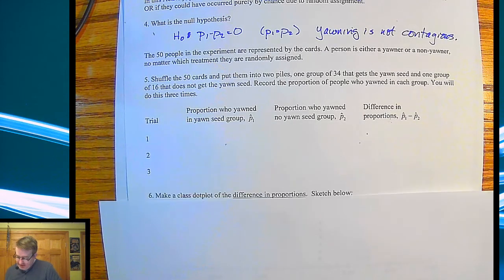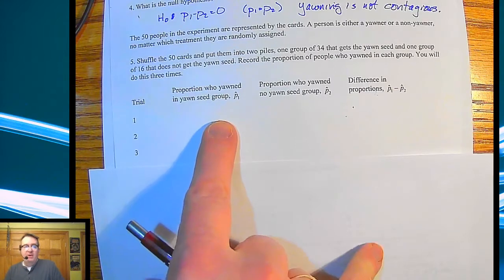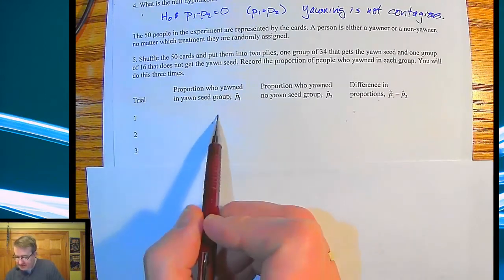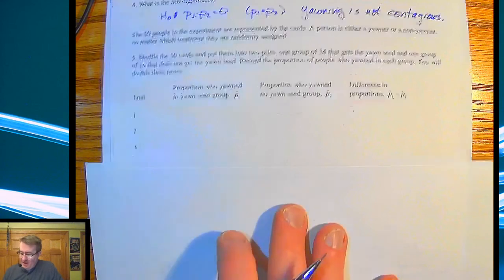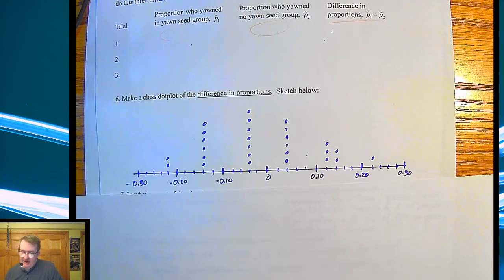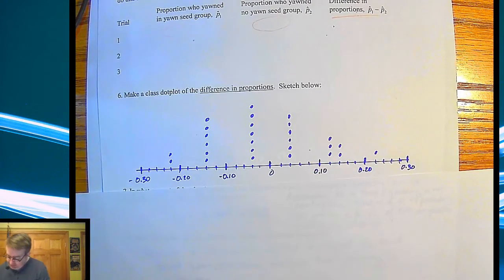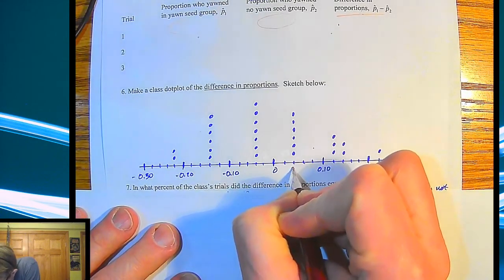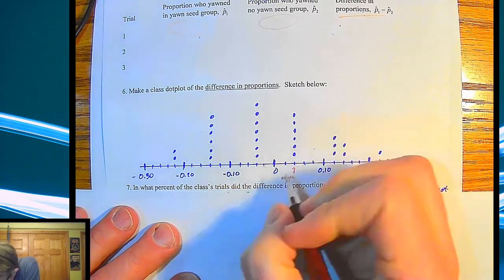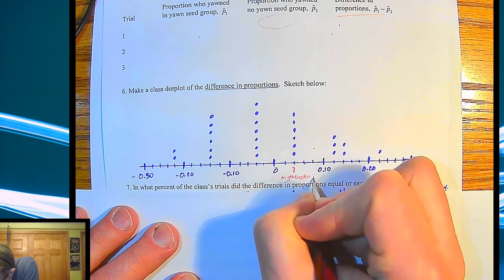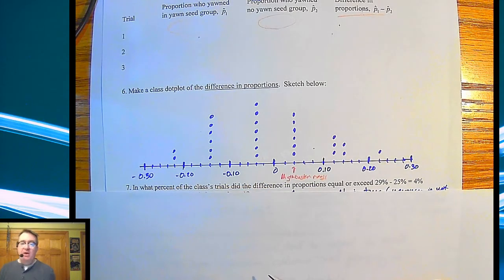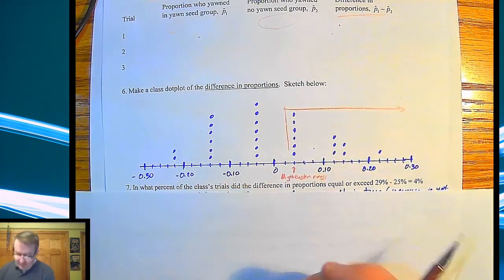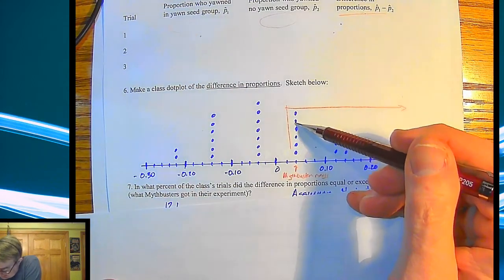So you'd go through and do that. You'd shuffle the card, one group of 34, one group of 16, record the proportion. So I don't have this written down here because obviously these things are going to be different. It can be different depending upon what you come up with. But what my class did is they came up with a percentage here, percentage here, and then they subtracted over here. So they had three different setups for that. And then we posted it in a dot plot. Why? Because that is what we do. Now, the other thing to remember here is this is where the MythBusters were.